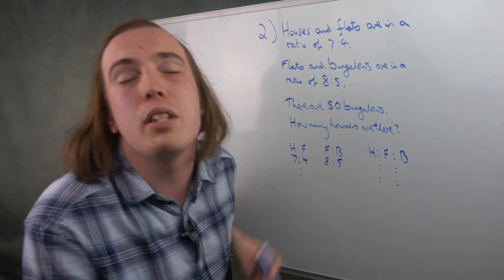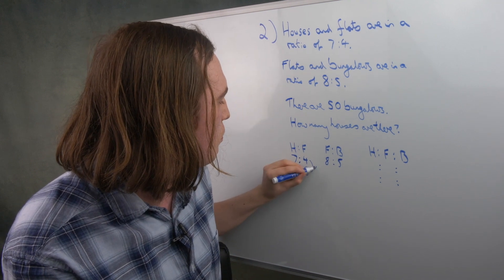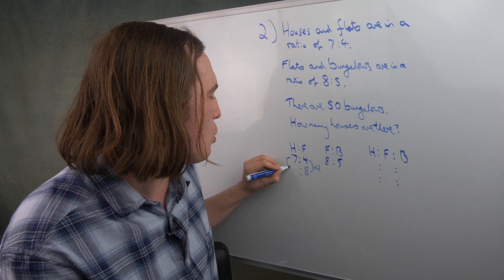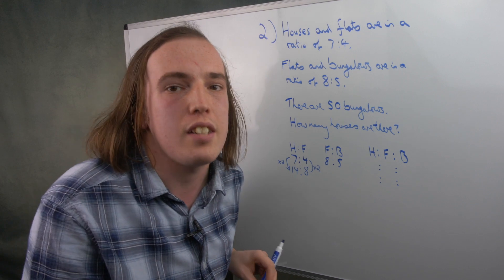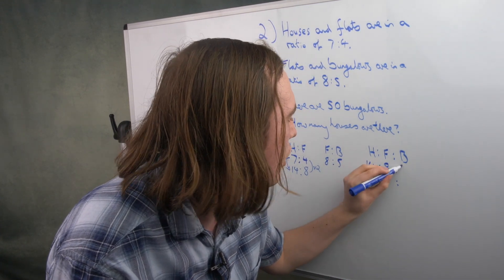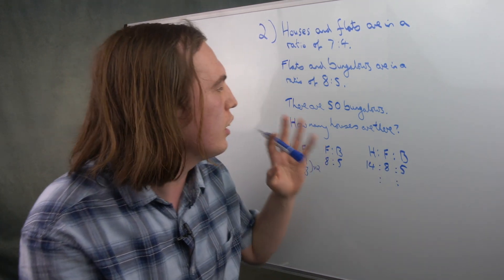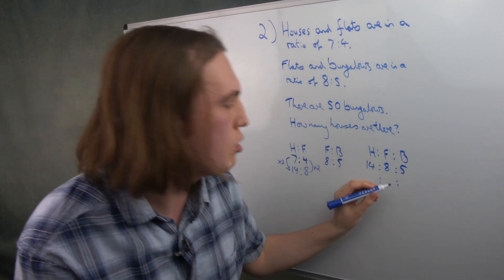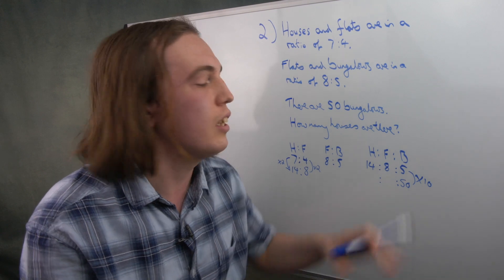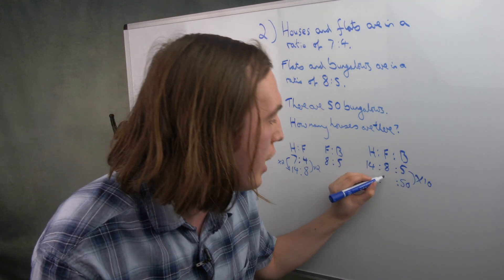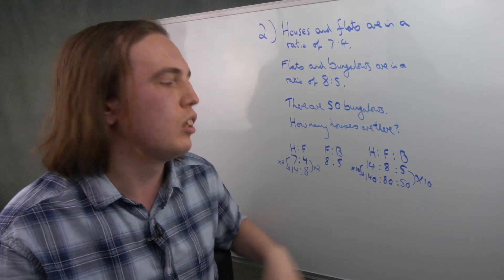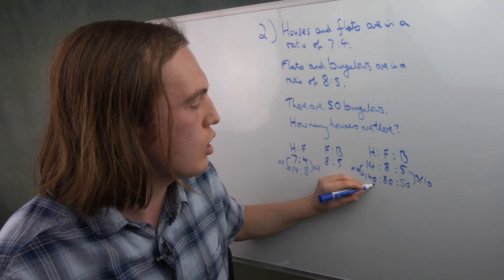At the moment, we have flats in both ratios, but we can't just squish them together because these aren't the same number. We need flats to be the same in both. How can we turn a 4 into an 8? Times it by 2. But just like fractions, if you do something to one part, you have to do the same to the other — so we also times the 7 by 2 to make 14 to 8. Now flats are 8 in both ratios, so the houses to flats to bungalows is 14 to 8 to 5. There are 50 bungalows, so to turn 5 into 50 we times by 10. So 8 becomes 80 and 14 becomes 140 — meaning there are 140 houses.